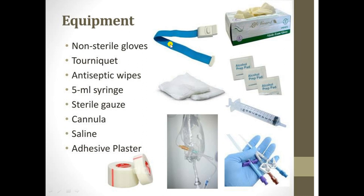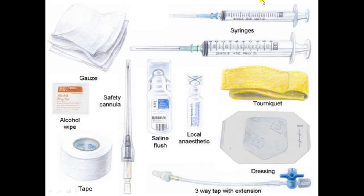A tourniquet is a device that applies pressure to a limb or extremity in order to limit but not stop the flow of blood. It may be used in an emergency. A 5 ml syringe is used because when you insert the cannula, you push saline through it to check if it is in the proper position and that there is no thrombosis. Other equipment includes gauze, alcohol wipe, tape, local anesthetic, dressing, and a 3-way extension tap.